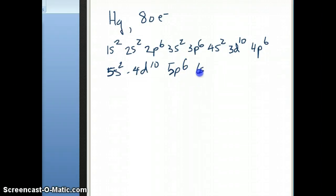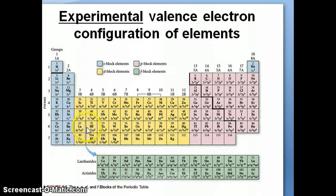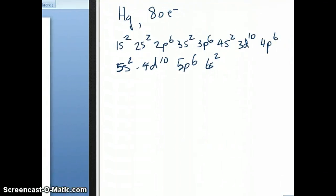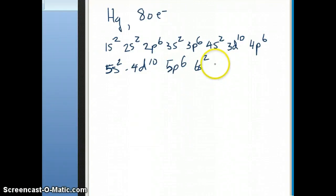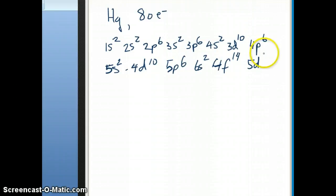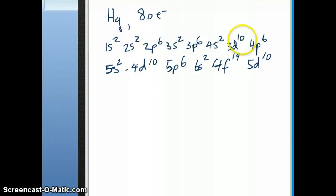Next we go into the sixth period with 6s2. Keep in mind that when you go to 6s, you'll then go to 5d, but 5d passes through the lanthanide series which is the f block. So before going to 5d, you must write 4f14, and then 5d10 to complete mercury's configuration. Checking the total: 10+10+10+2+6+2+6+2+6+14+2 = 80 electrons — exactly correct.